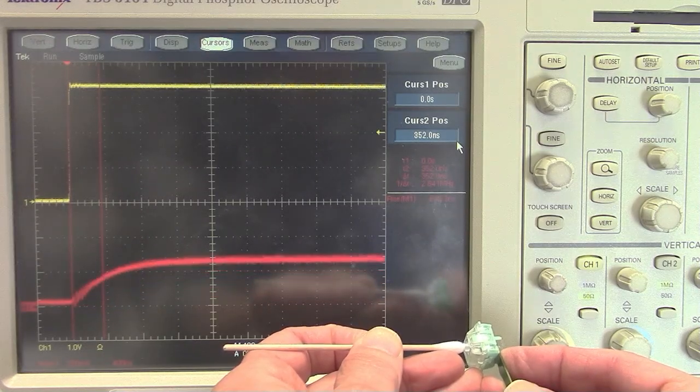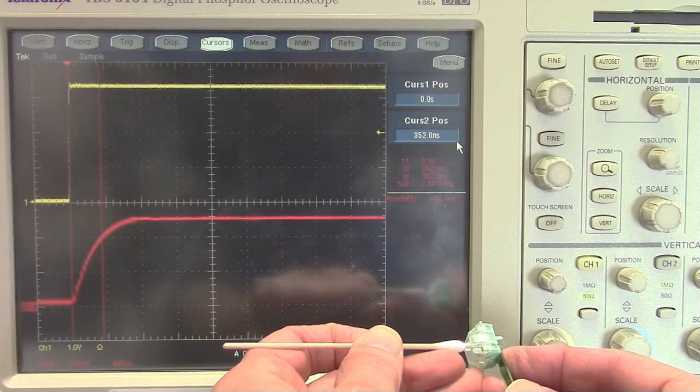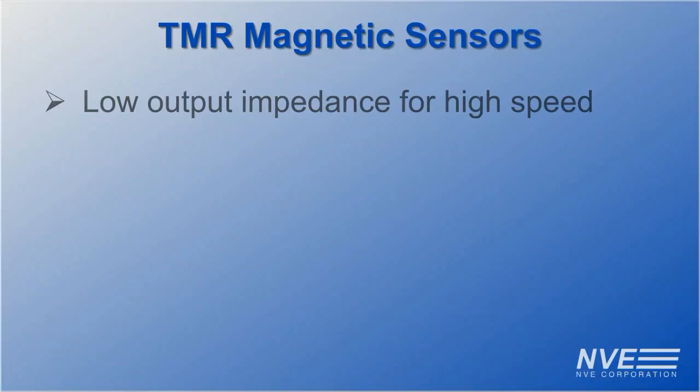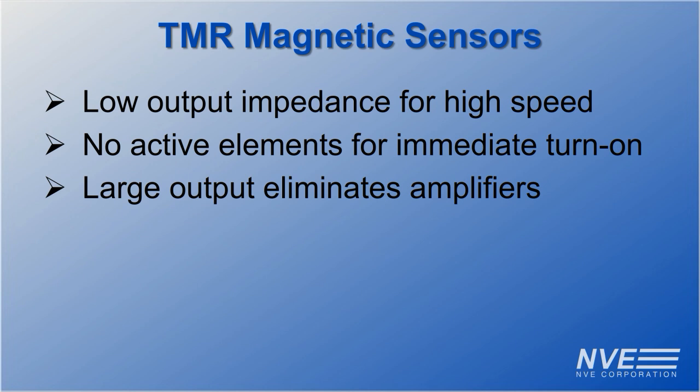So we've seen that NVE TMR sensors have low output impedance for high speed and immediate turn-on. Since the sensors don't need internal amplifiers, large output signals eliminate the need for external amplification.